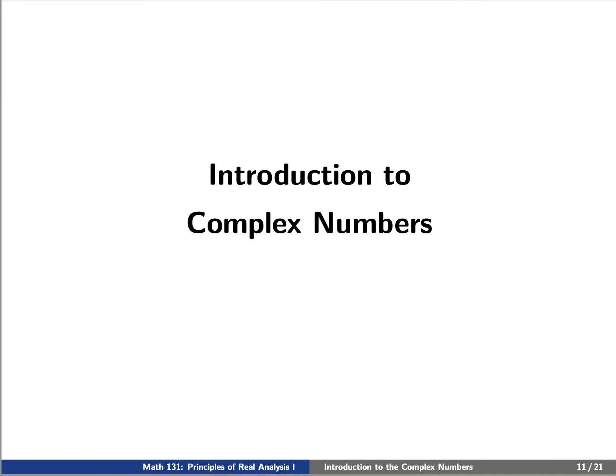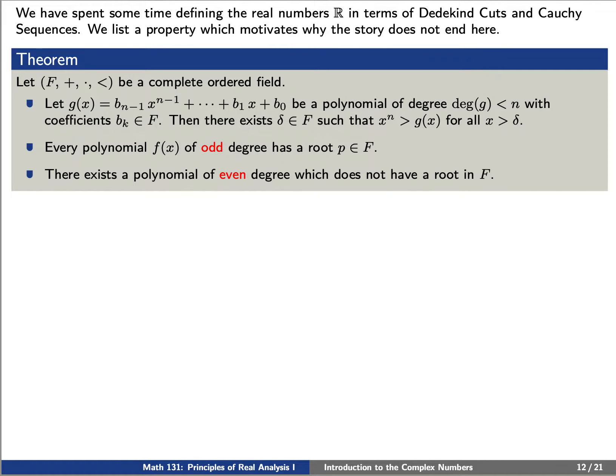Now we'd like to introduce complex numbers. We've spent some time so far in this course defining the real numbers in terms of Dedekind cuts and Cauchy sequences. We're going to now list a property which motivates why the story does not end here. Let's say that f is a complete ordered field, like the real numbers. First, let g be a polynomial of degree less than n where the coefficients b sub k lie in our field f.